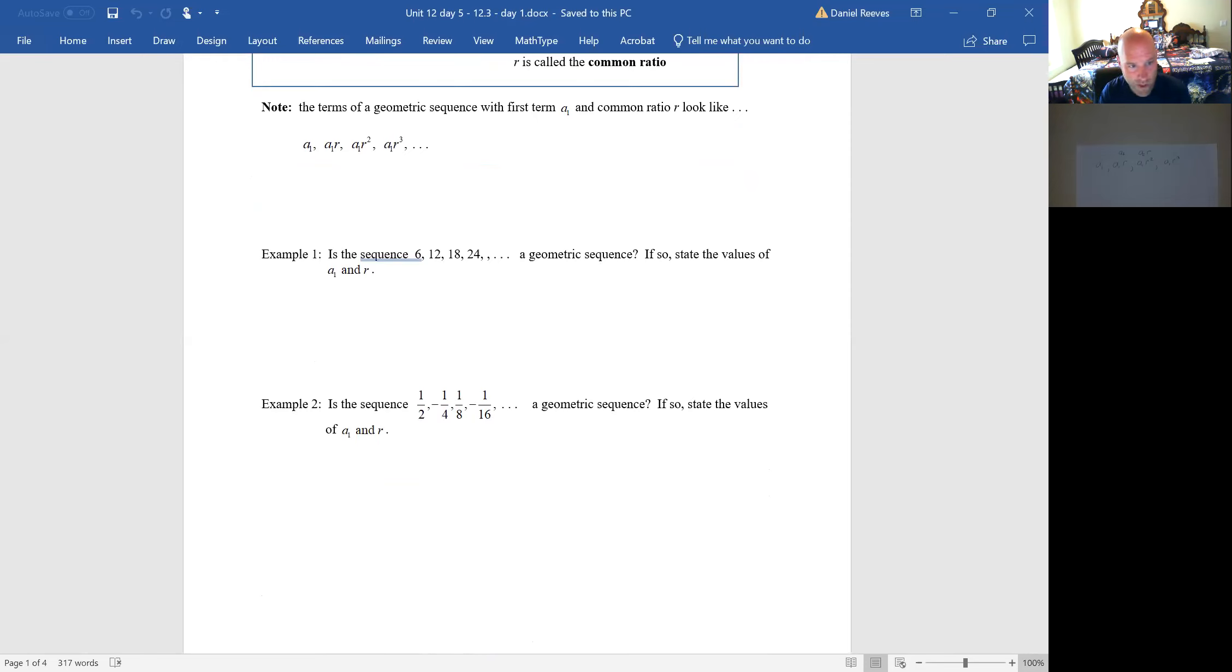On the other hand, example two where we have one half negative one fourth, positive one eighth and negative one sixteenth. That is, obviously my first term, a sub one is just one half. And that ratio, here we go. What am I multiplying by? I'm multiplying by negative one half, which will make the series alternate from positive to negative, positive to negative. Okay. All right.